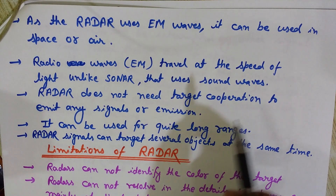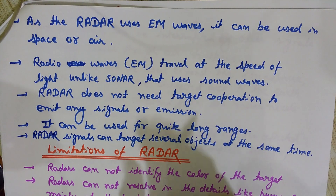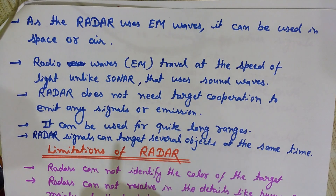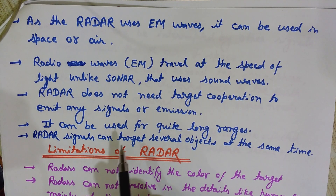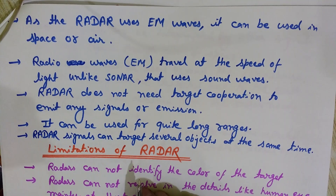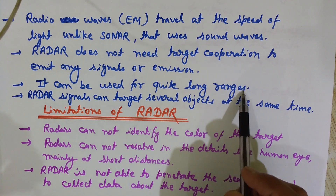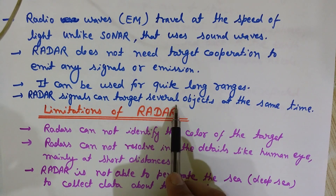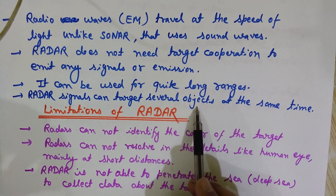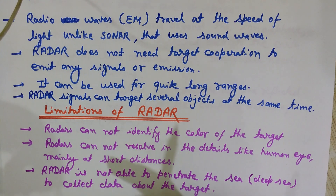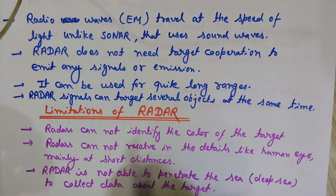Radar does not need target cooperation to emit any signals. There is no requirement that the target to be detected should emit signals or have any kind of emission. Even if the target is not transmitting any signals, it can still be detected by the radar easily. Radar can also be used for quite long ranges — targets located at large distances can be tracked. Additionally, radar signals can target several objects at the same time, gathering information about all target objects simultaneously.